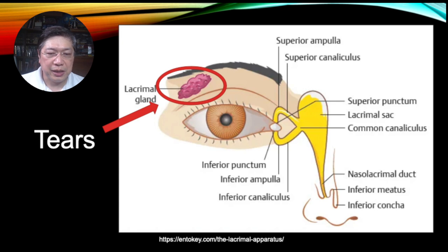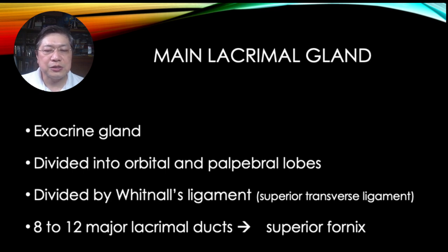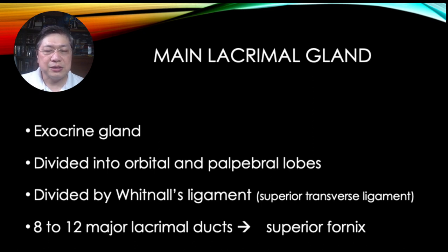The lacrimal gland creates your tears. It's an exocrine gland divided into two parts — not just one blob of gland. It's divided into the orbital and the palpebral lobes by Whitnall's ligament, or the superior transverse ligament. It has 8 to 12 major lacrimal ducts which drain into the superior fornix. The orbital and palpebral lobes have connections to each other — they are not totally separated. If you destroy the palpebral lobe of the lacrimal gland, there will be a massive decrease in the amount of tears produced.